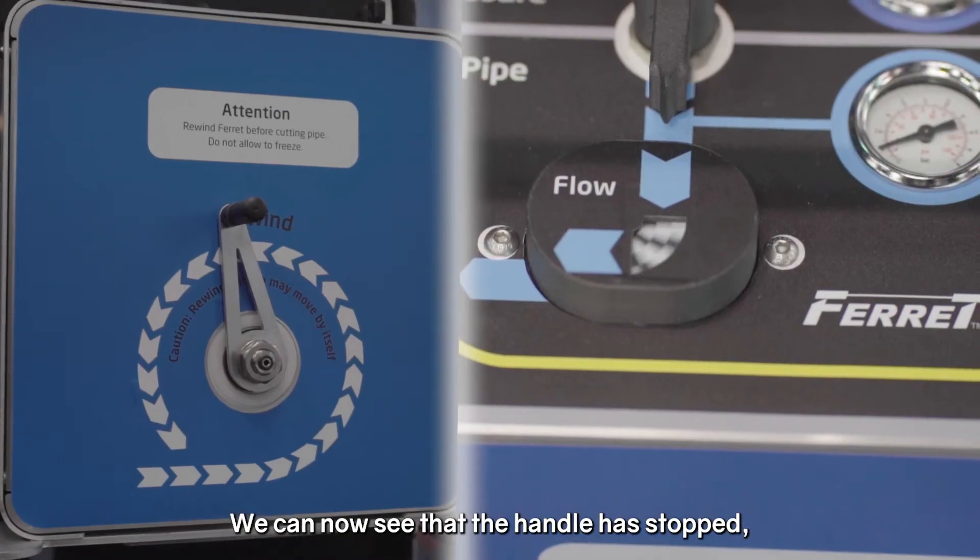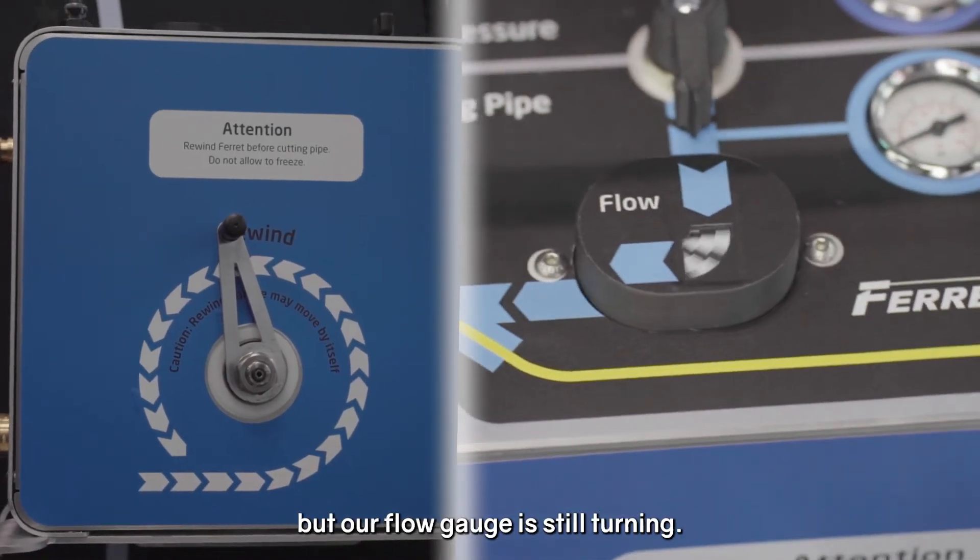We can now see the handle has stopped but our flow gauge is still turning.